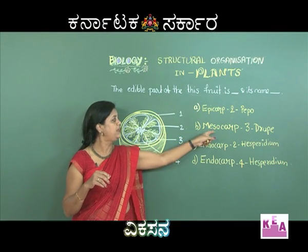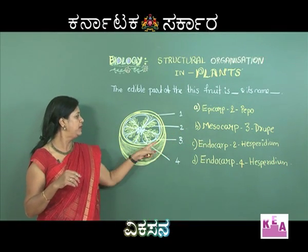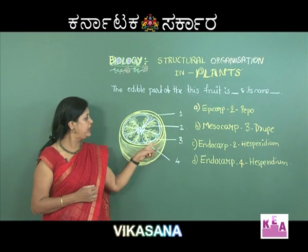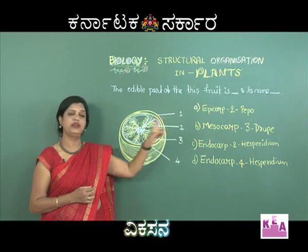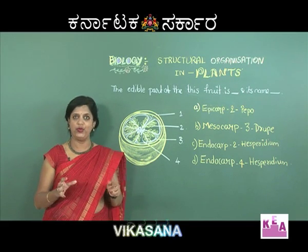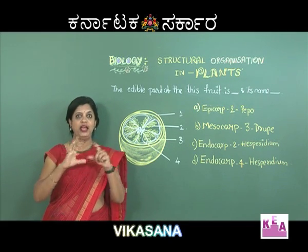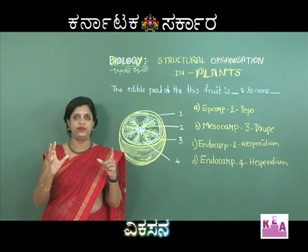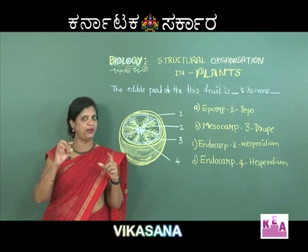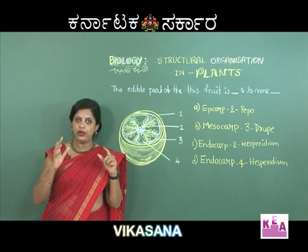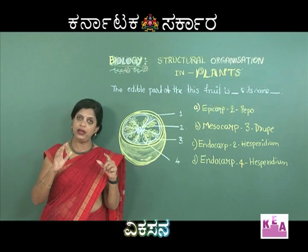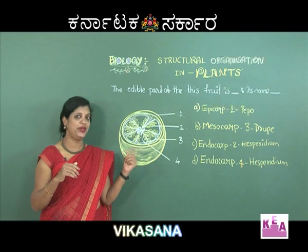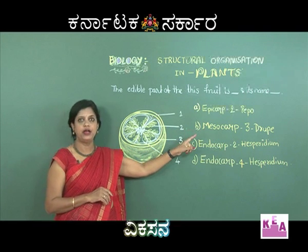The second option says the third part (mesocarp) is mesocarp, and calls it a drupe. Mesocarp does match the third label, but this is not a drupe fruit. In a drupe like mango, the epicarp is slightly leathery, the mesocarp is thick, fleshy, and juicy, and the endocarp is thin and stony. Since this is a citrus family fruit, not a drupe, the second option is the wrong answer.